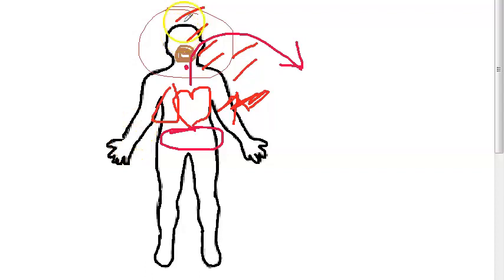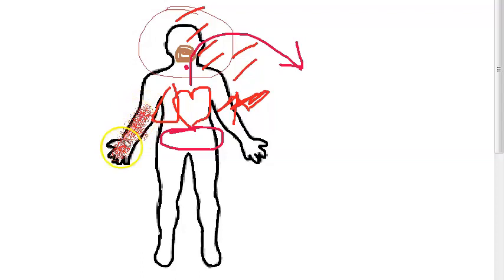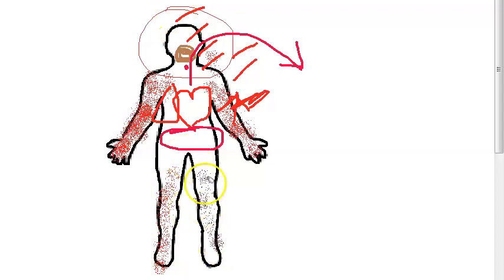In the skin, due to cyanide poisoning, there will be brick red discoloration. This is very important — in cyanide poisoning there is brick red discoloration of the skin. Brick red will actually look brownish-red in color.